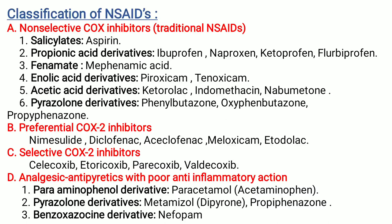Fourth category is analgesic antipyretics with poor anti-inflammatory action. There are three types. First is para-aminophenol derivatives — example is paracetamol, also called acetaminophen. Second is pyrazolone derivatives — example is metamizole and propifenazone. Third is benzoxycane derivative — example is nabumetone.